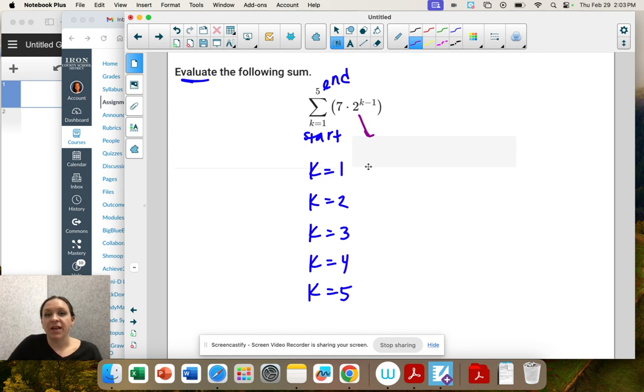So 7 times 2, but k we're replacing as 1 and it changes. Then we're going to replace it as 2, and see how it's an exponent? That means that this is a geometric sequence and we're multiplying between terms.